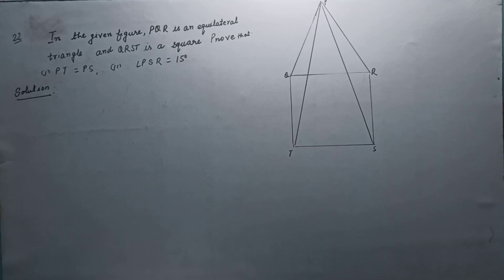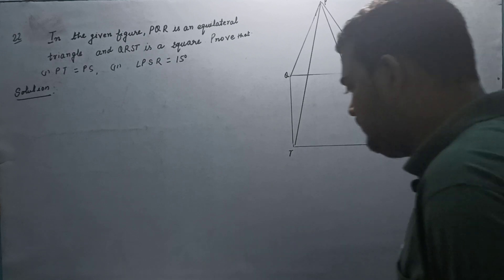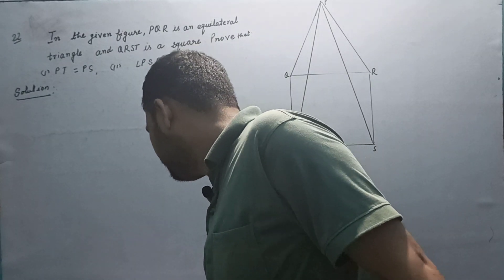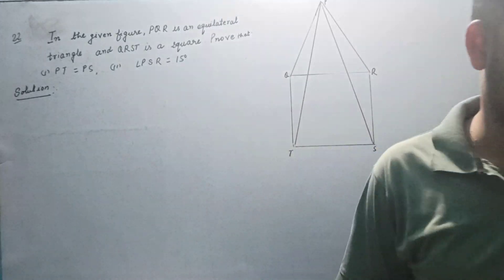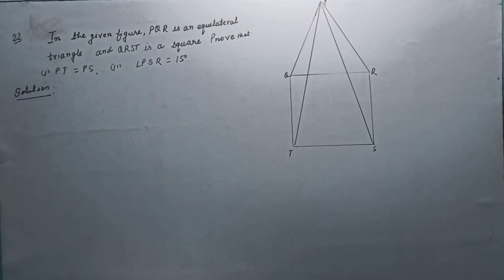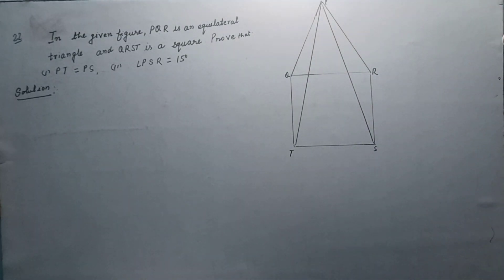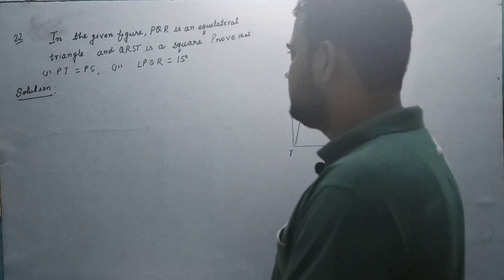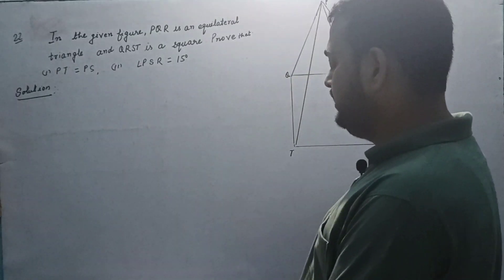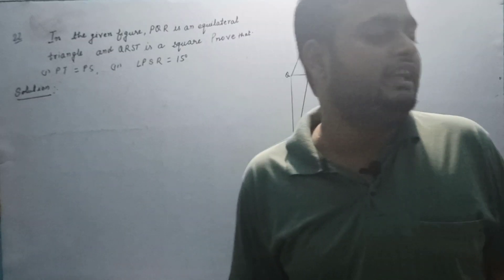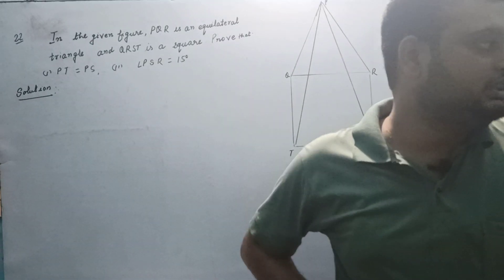Hello students, today we solve question number 22 of R.S. Agarwal book exercise 5A. The question is: in the given figure, PQR is an equilateral triangle and QRST is a square. Prove that PT equal PS and angle PSR equal 15 degrees. So this is the question.